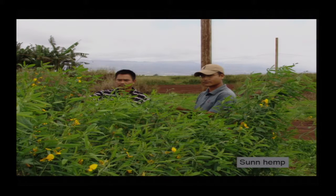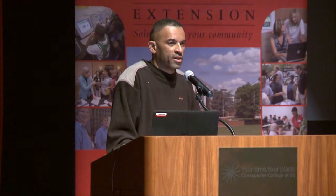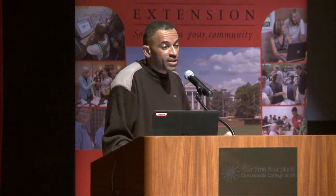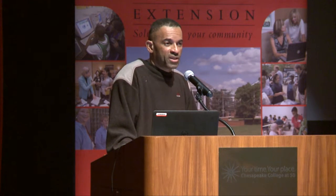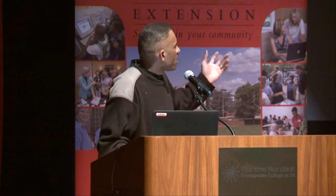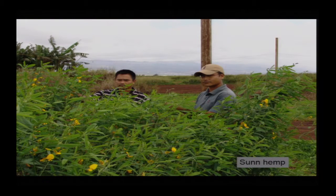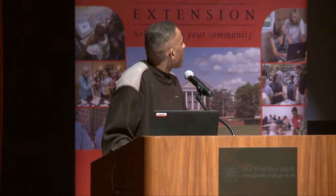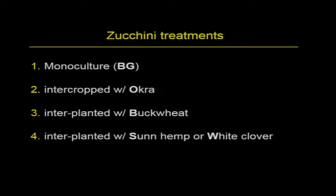The plant I was interested in adding to this system with squash was sunhemp. The reason I was very interested in sunhemp is that it was an extremely popular cover crop in Hawaii — all the farmers knew about it. One reason it was so popular is that Hawaii has a terrible root-knot nematode problem, and sunhemp is allelopathic to root-knot nematodes. Farmers would grow it on lands infested with the nematode, then till it under and it would kill off the root-knot nematodes. But I was interested in whether there could be some pest suppression benefits other than nematodes. So I set up a four-treatment study: zucchini grown in monoculture, a crop with okra, or interplanted with either buckwheat, sunhemp, or white clover depending on the location.